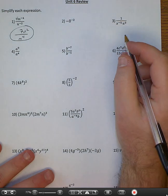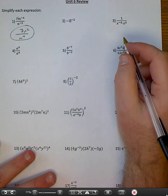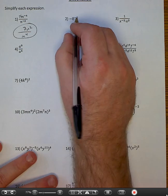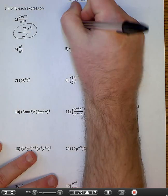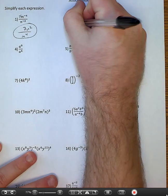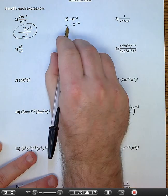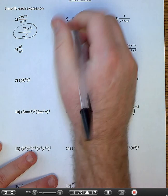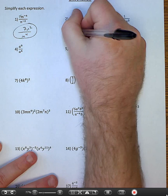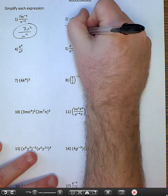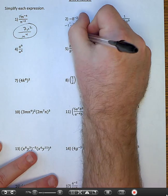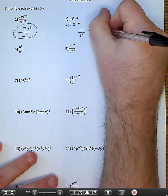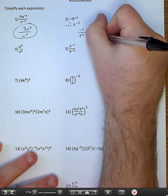Number two — this one gets people all the time. That negative is like a negative one times eight to the negative second. The negative one has an exponent of one, it's actually happy on top, so it's going to stay on top. The eight goes to the bottom and becomes eight squared. Eight squared is 64, so my answer here is negative one over 64.